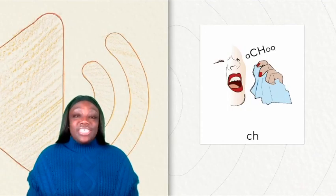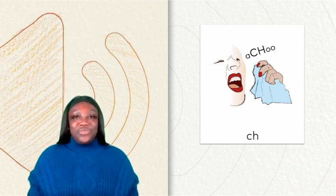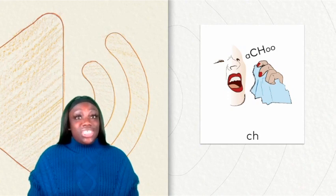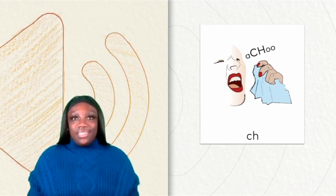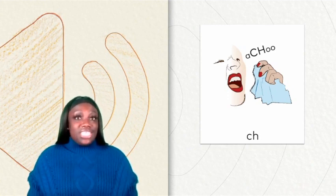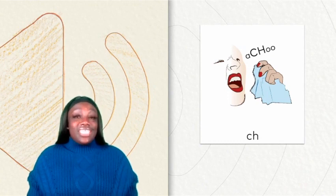This picture shows someone about to sneeze. Sneezing sounds like achoo. We hear the ch sound in achoo. The ch is made when letters C and H are together. Now let's say the sound together. Ch. This is a digraph, the digraph CH.